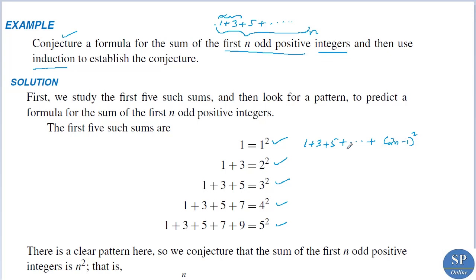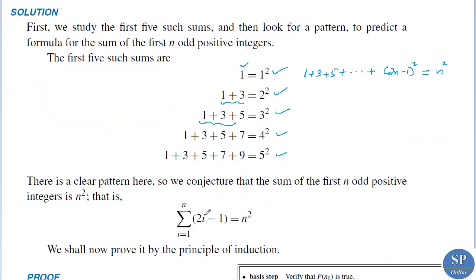So (2n minus 1) is the nth term or nth odd positive integer. Summarizing: for 2 terms we get 2 squared, for 3 terms we get 3 squared, for 4 terms we get 4 squared, for 5 terms we get 5 squared. So our formula can be written as: summation i from 1 to n of (2i minus 1) equals n squared.